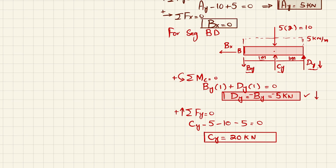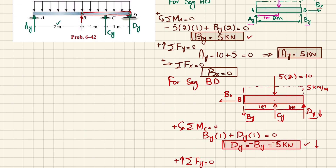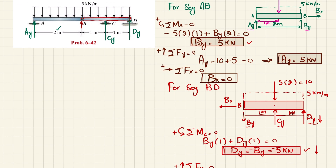Also, BX is zero as confirmed earlier. Now we have all the forces: AY = 5 kN, BY = 5 kN, CY = 20 kN, DY = 5 kN (downward). We will now draw the shear force and bending moment diagram.